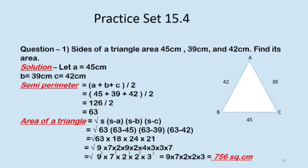Now split the numbers. 63 can be 9 into 7, 18 can be 2 into 9, 24 can be 2 into 4 into 3, and 21 can be 3 into 7. So your next step will be square root of 9 into 7 into 2 into 9 into 2 into 4 into 3 into 7. Now take the squares out: square root of (9 into 9) into (9 into 2 into 2 into 7 into 2 into 3).